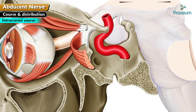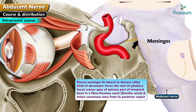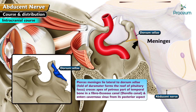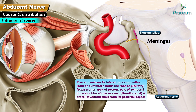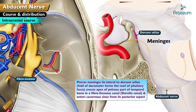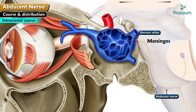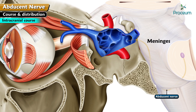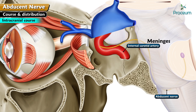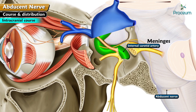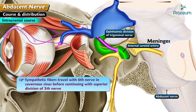Intracranial course. The abducens nerve pierces the meninges, lies lateral to the dorsum sellae, and crosses the apex of the petrous part of the temporal bone in a fibroosseous canal. It then enters the cavernous sinus from its posterior aspect. In the sinus, it is lateral to the internal carotid artery and medial to the ophthalmic division of the trigeminal nerve. Sympathetic fibers travel with the 6th nerve in the cavernous sinus before continuing with the superior division of the 5th, or trigeminal, nerve.